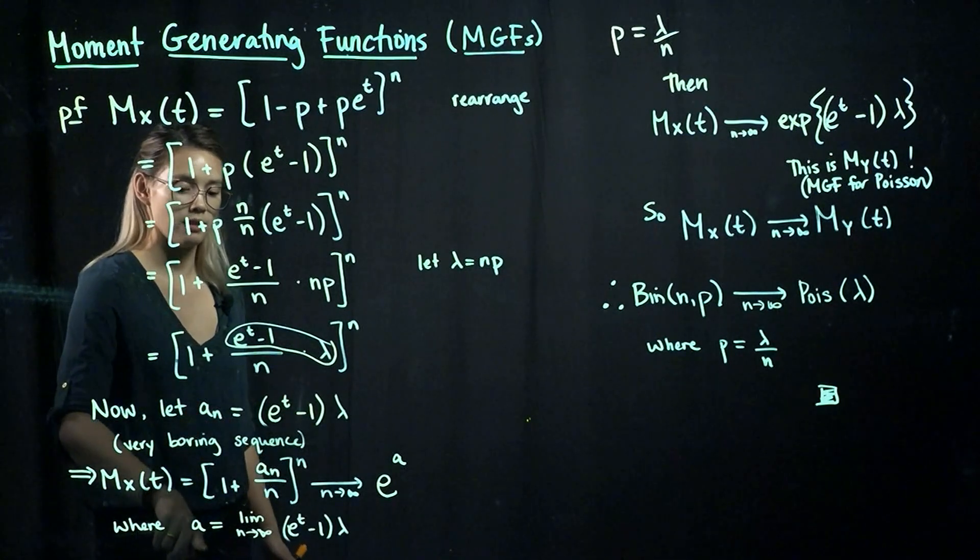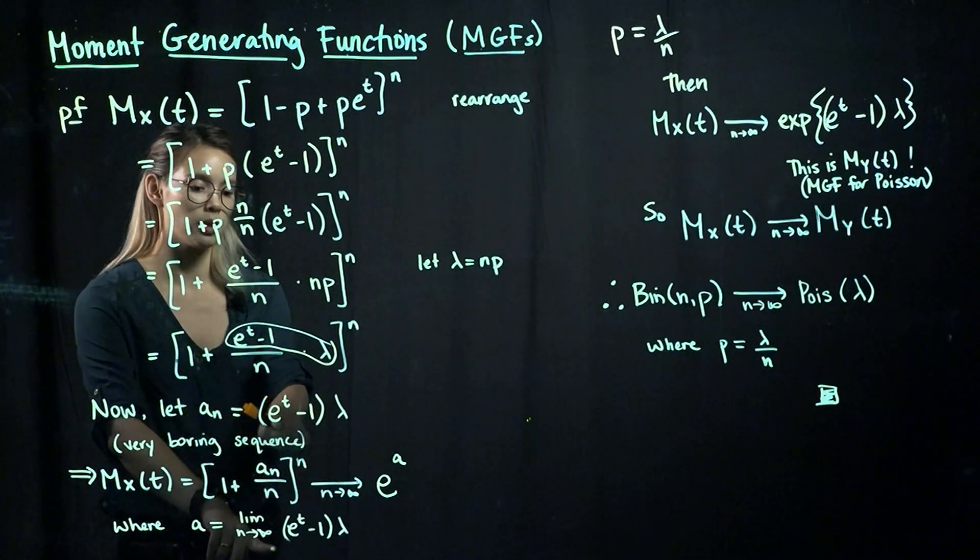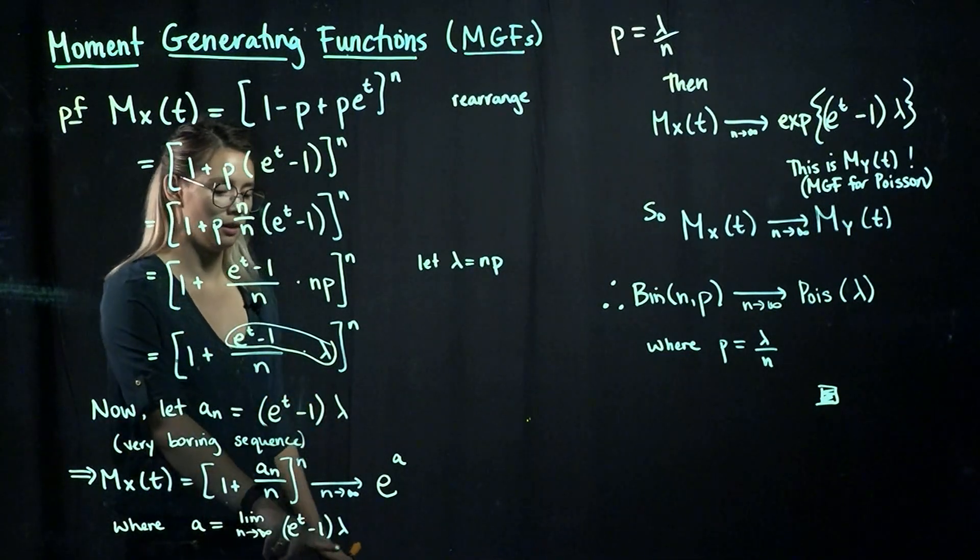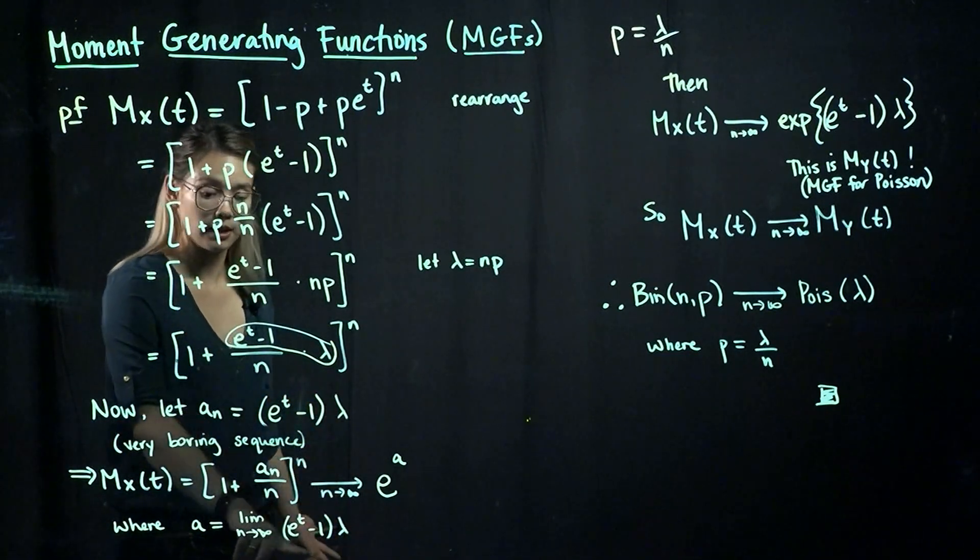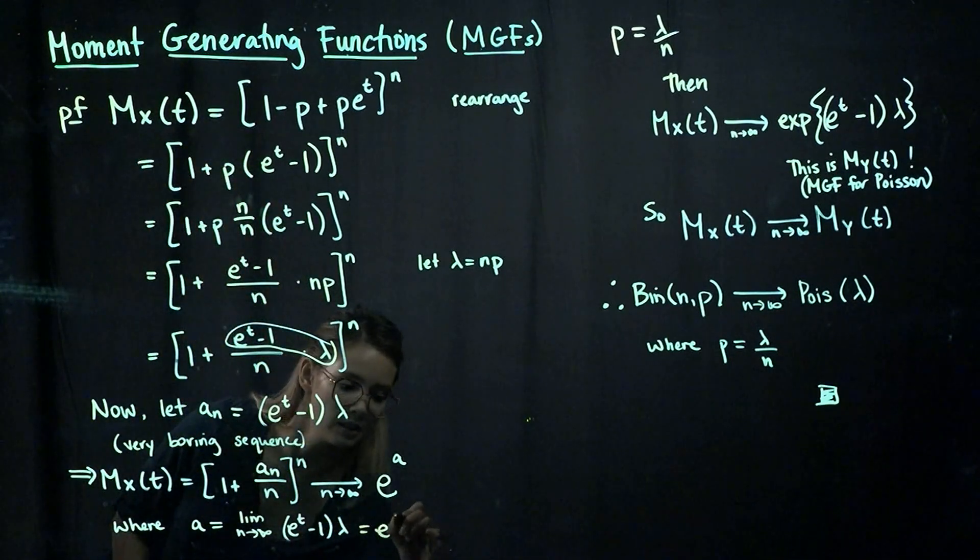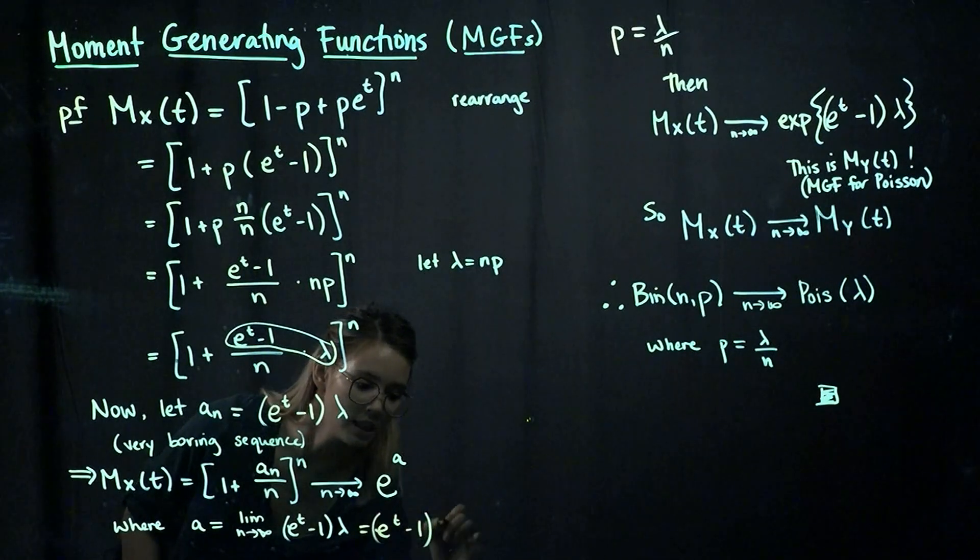Okay, so a is the limit of our sequence, and our sequence was e to the t minus 1 times lambda. Well, that was a boring sequence. It doesn't have any n's in it at all, so we know that our limit is just equal to e to the t minus 1 times lambda.